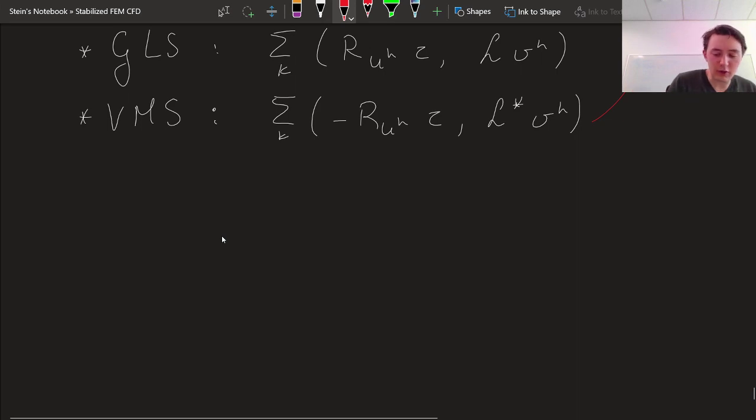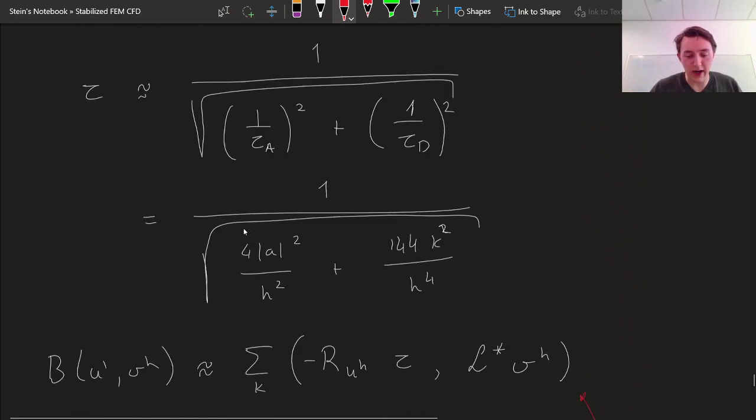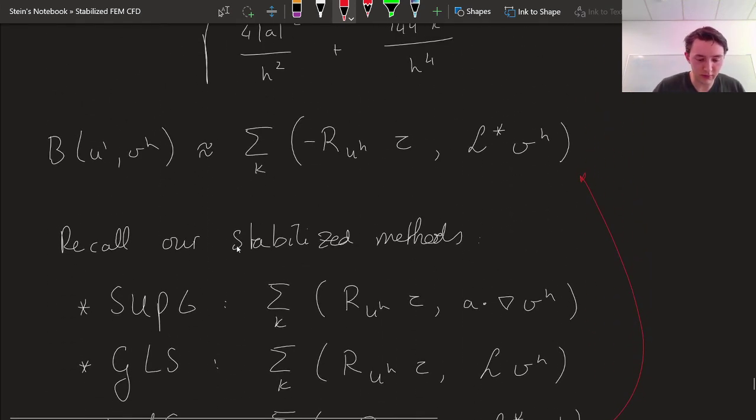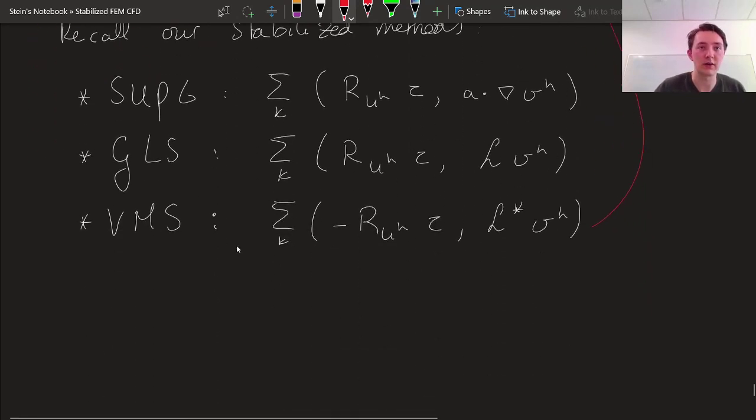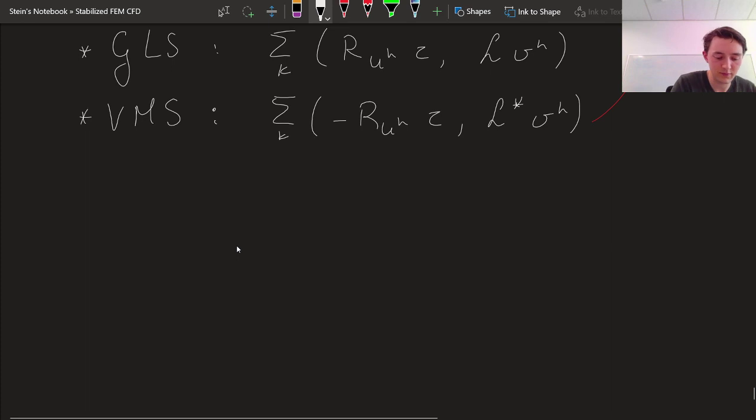So the first thing we're going to do is we're going to rewrite this bilinear form, this thing over here, as an advection and a diffusion part. So first we're going to rewrite B and I'll use the fine scales already.